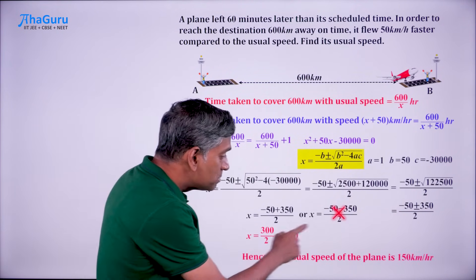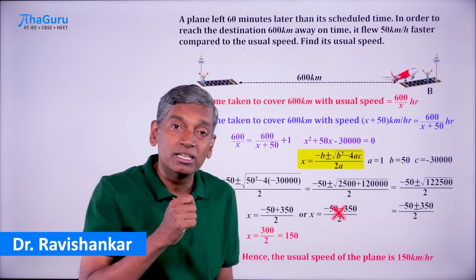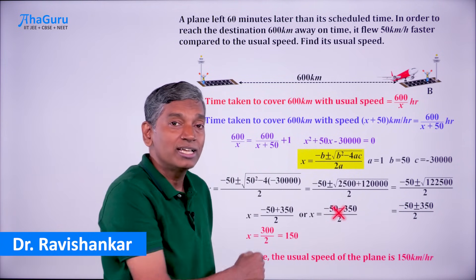That means the usual speed of the plane is 150 kilometers per hour which is what we were asked to find.